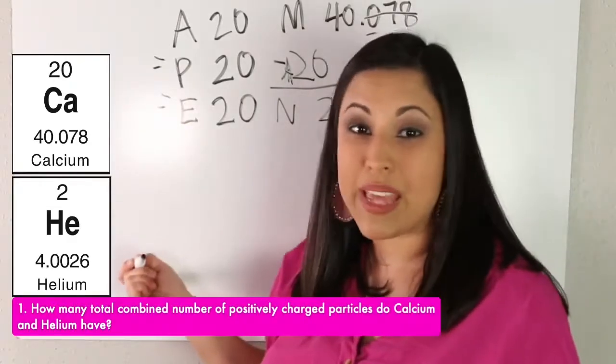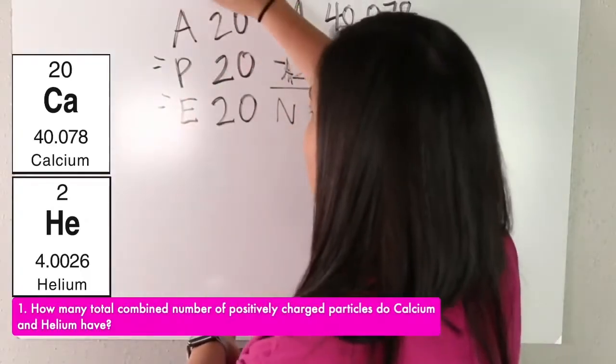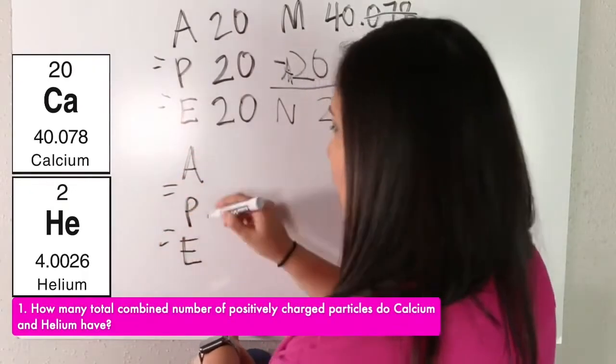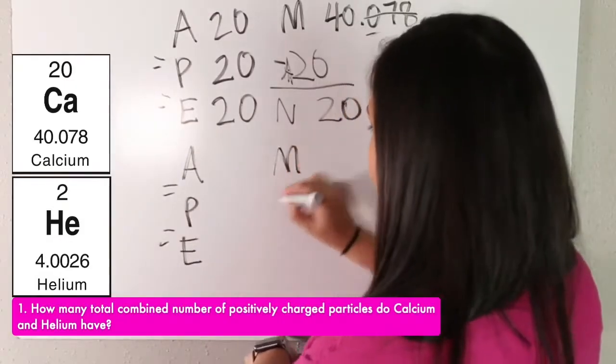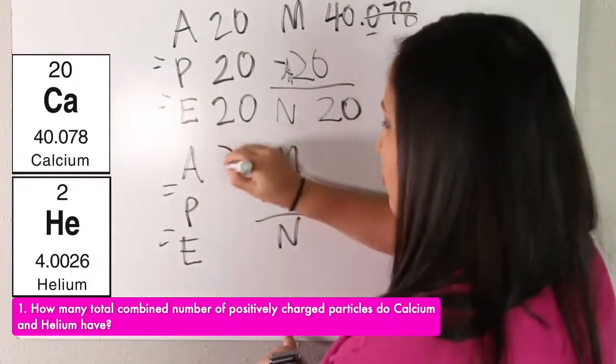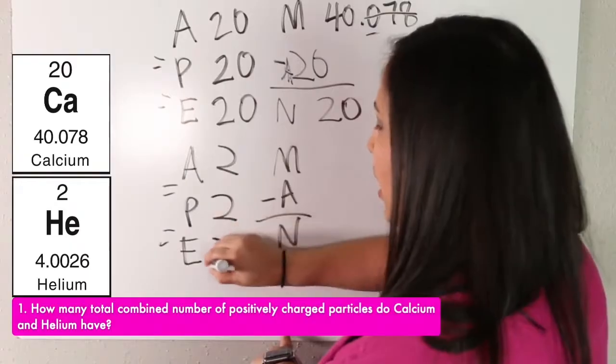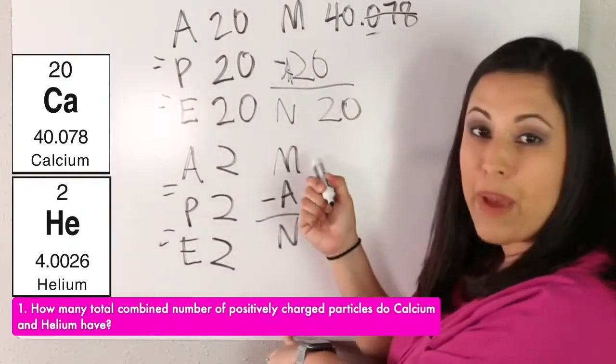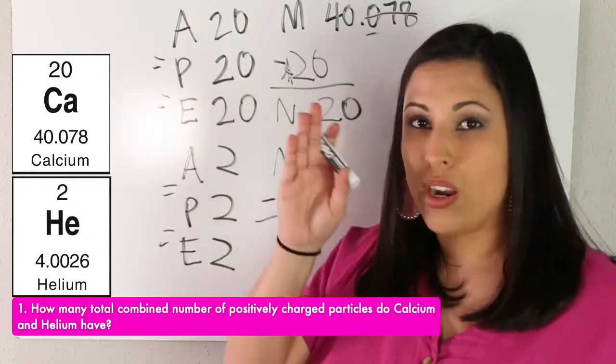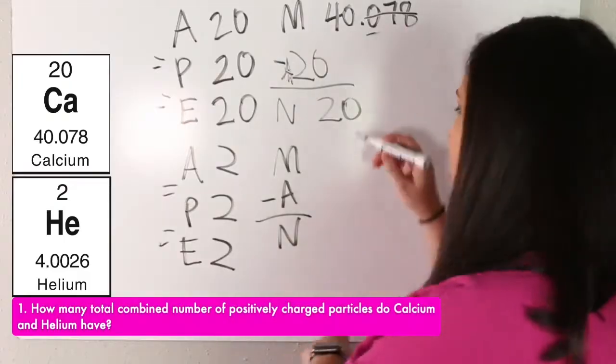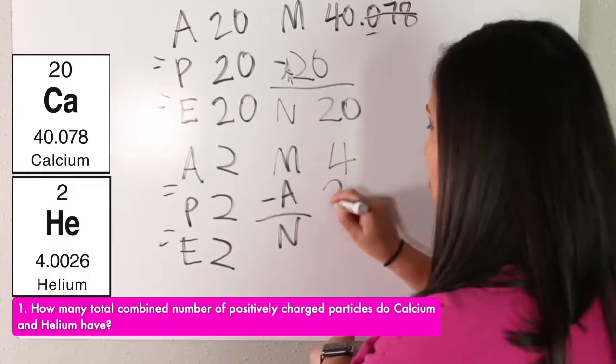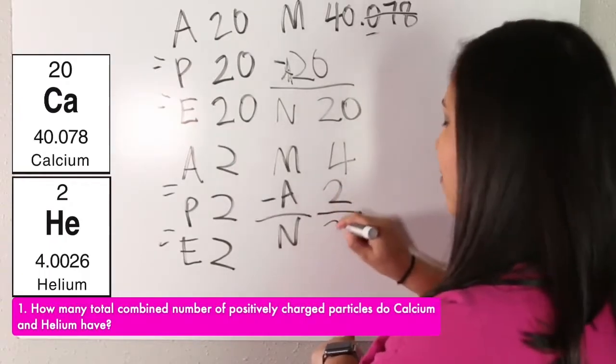Now we do the same thing for helium. A equals P equals E, M minus A equals N. Our atomic number for helium is two. So our protons are two, electrons are two. Our mass is 4.0026. So five or more, or four or less? It's four or less, so we get rid of the rest. Our mass stays 4 minus our atomic number. How many neutrons do we have? Two.